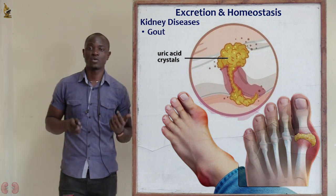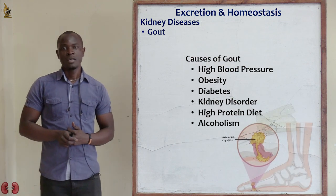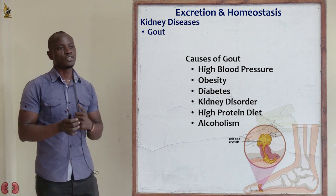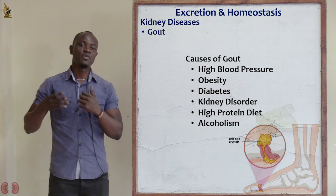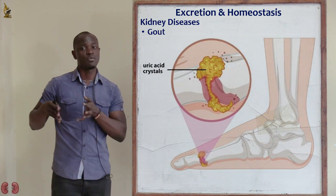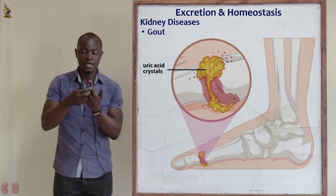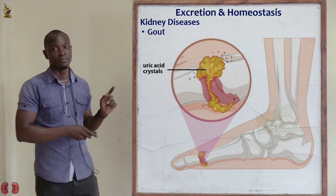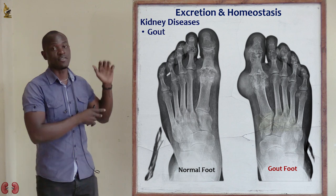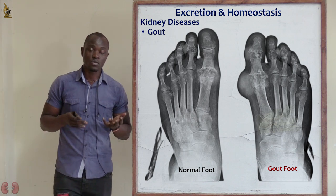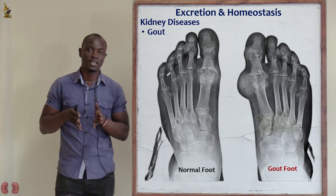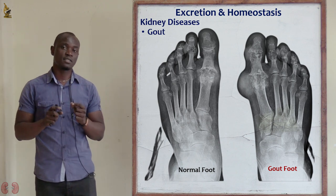Let's look at gout. Simply, gout is a complex form of arthritis whereby uric acid may be formed between the joints of the body. You can see that this is a normal foot and the other is a foot which has gout. Gout is very much painful. If much uric acid is deposited on the joints of the body, that disease is referred to as gout.